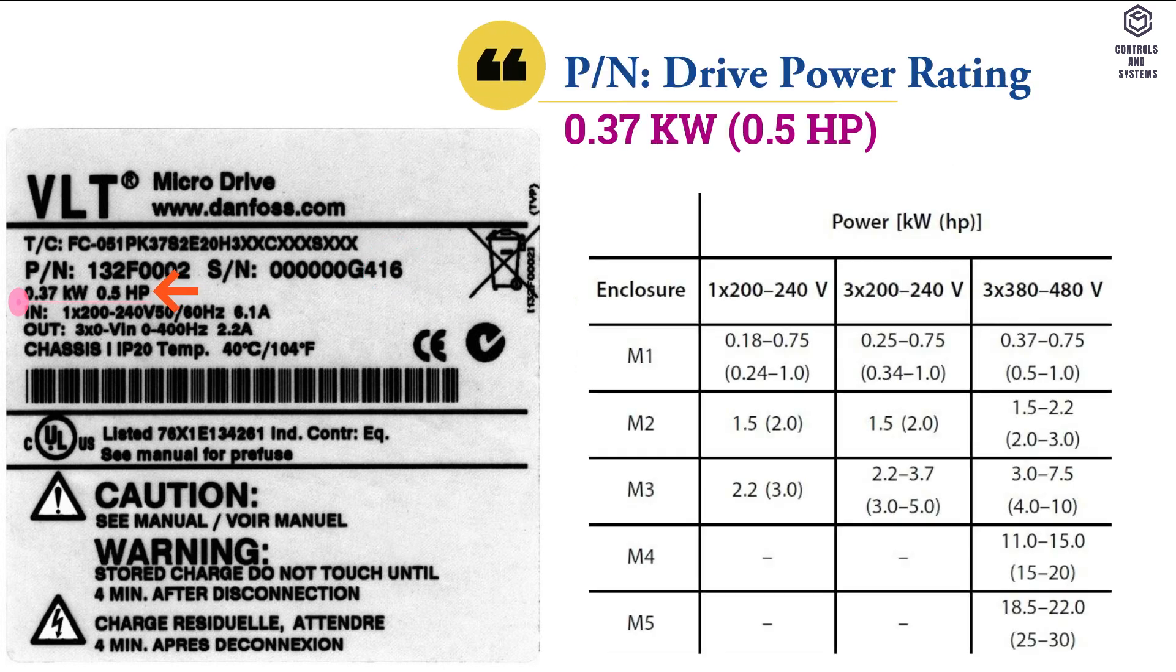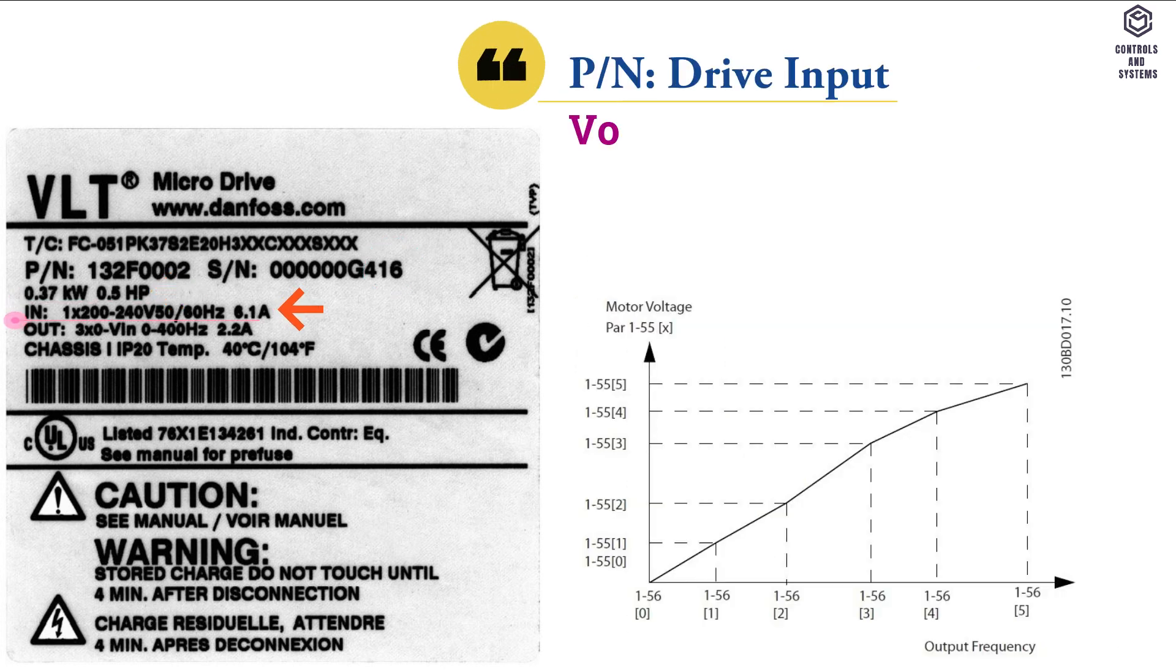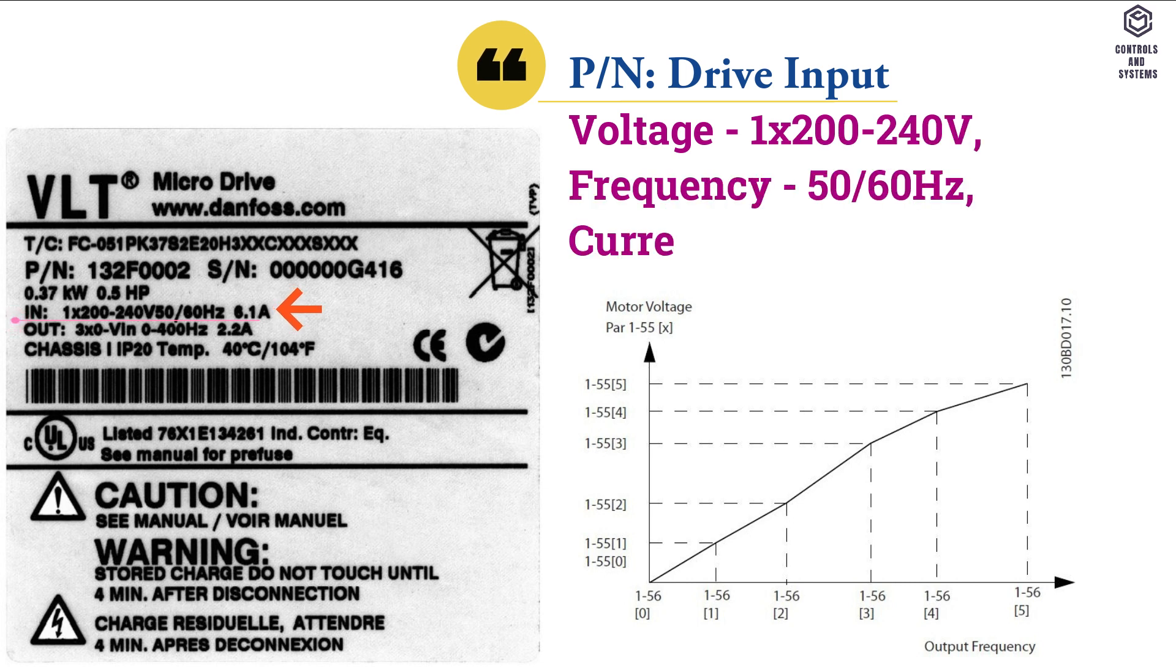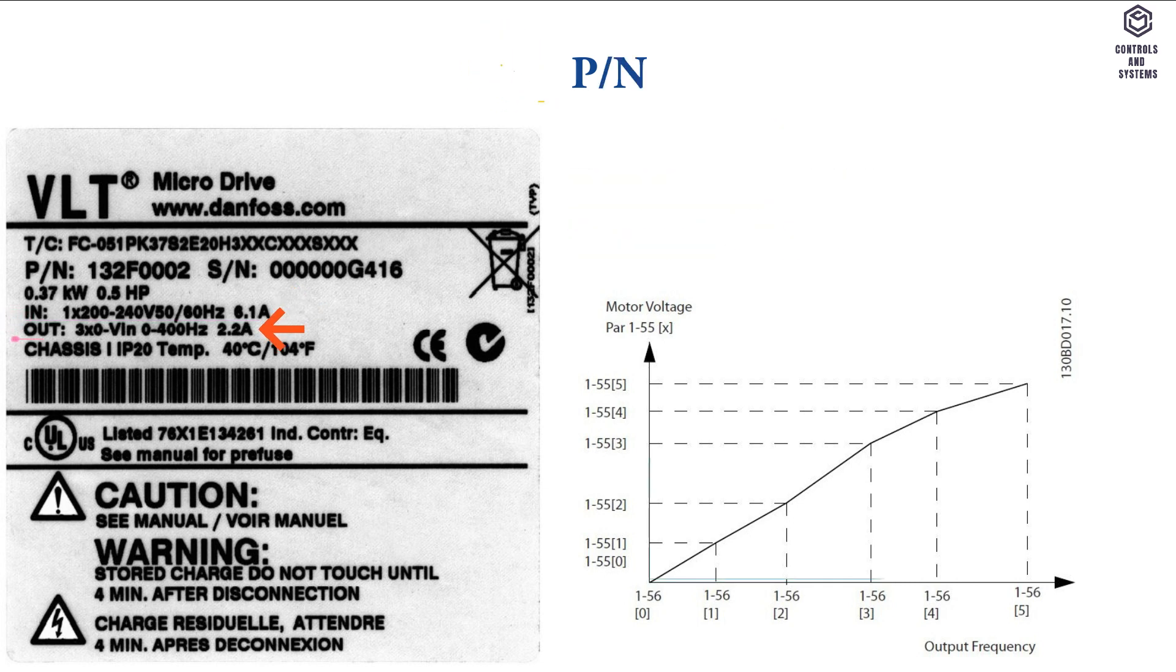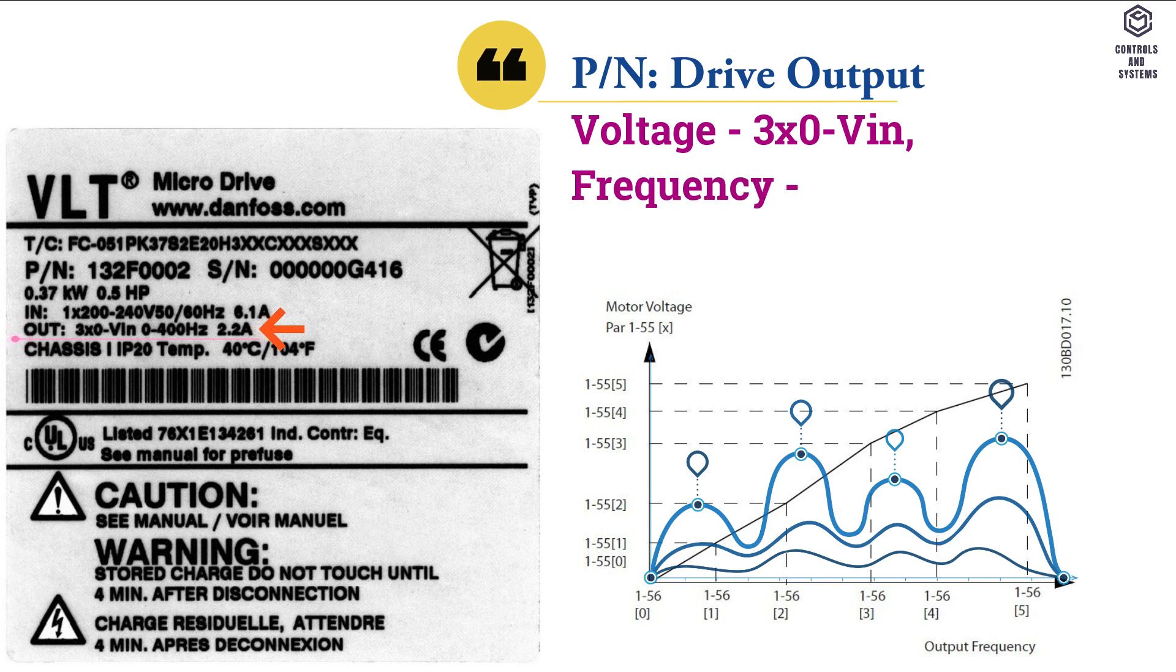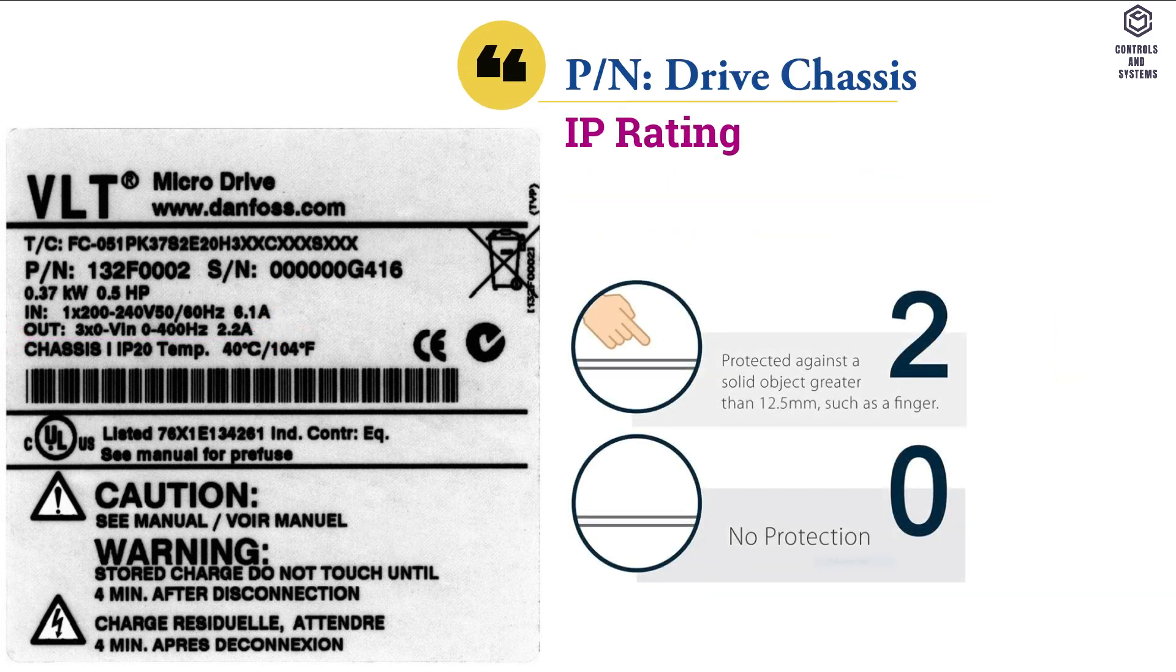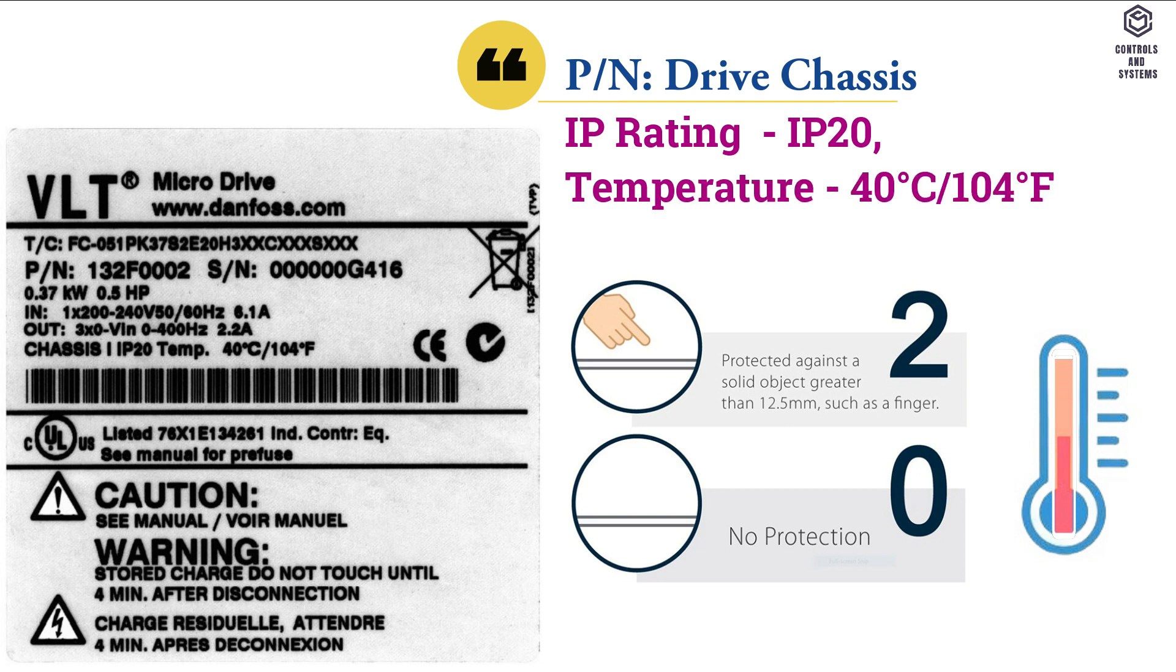Third row is the drive power rating, fourth row is the drive input voltage, frequency and current, fifth row is the drive output voltage, frequency and current, sixth row is the drive chassis IP rating and drive temperature.